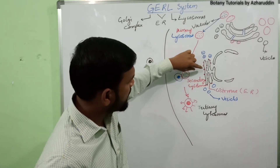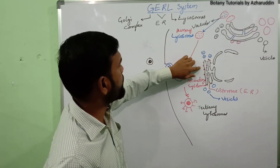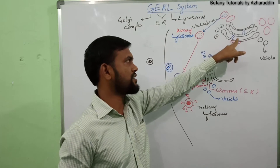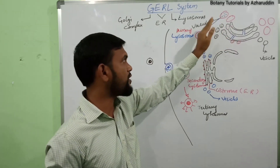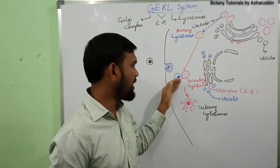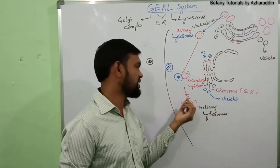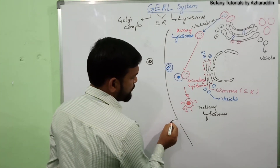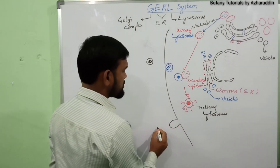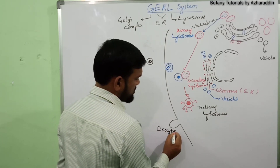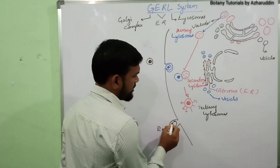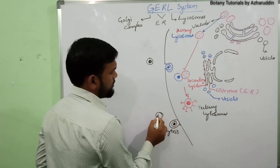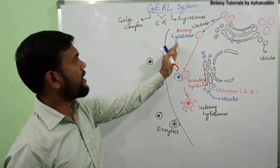To summarize the system: from the endoplasmic reticulum, vesicles are formed and their material is transferred to the cisternae of the Golgi bodies. From the Golgi bodies, lysosomes are formed. The lysosomes work on food material and digest it. The undigested food material is then thrown out from the cell by the process of exocytosis — the complex structure containing undigested material is pinched off and released from the cell.